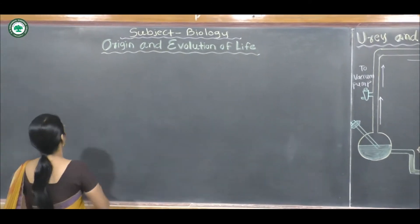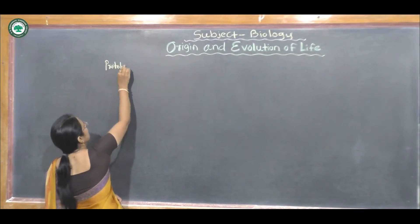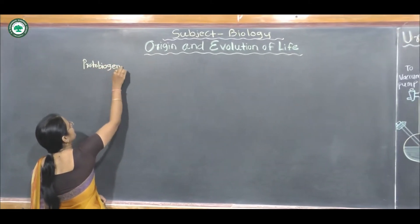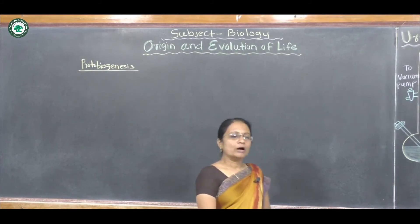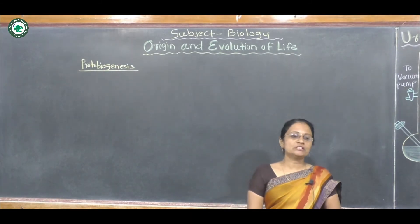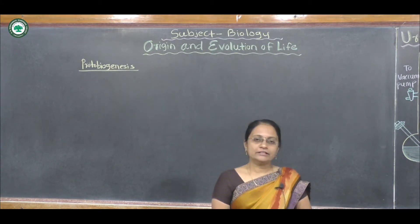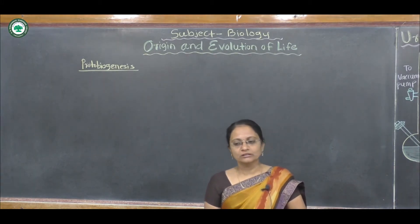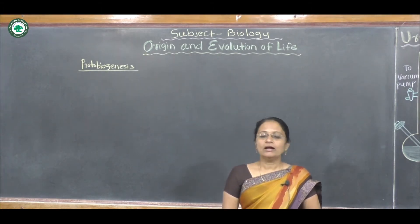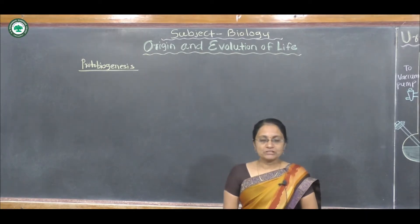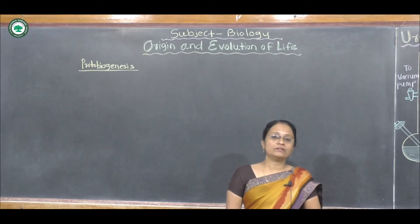First, you should know the term probiogenesis. Here 'proto' means primitive, 'bio' means living, and 'genesis' means formation. The process by which the first life was formed on Earth is known as probiogenesis. Different scientists have proposed different theories to explain how the first life originated on Earth's surface.